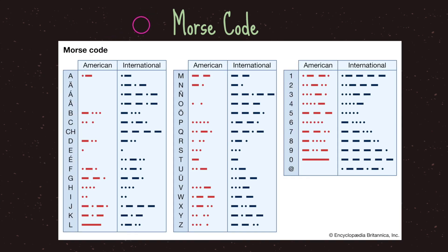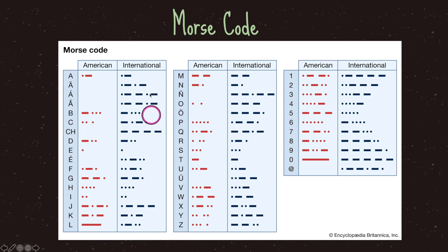As you can see in this chart, we have Morse code. On the left we have the English Latin language and on the right we have the dots and dashes.